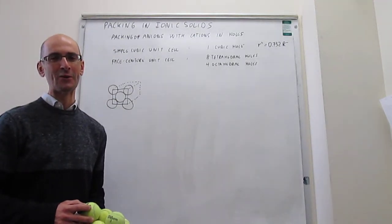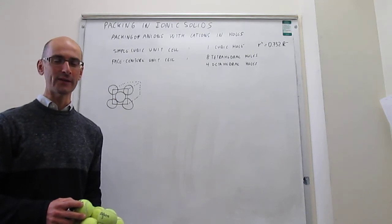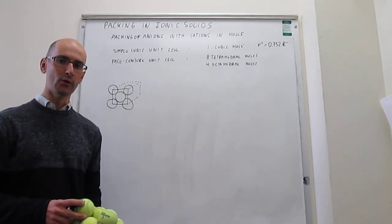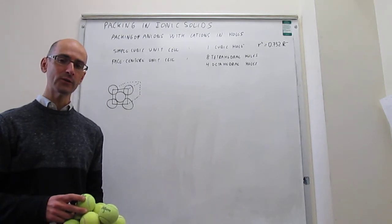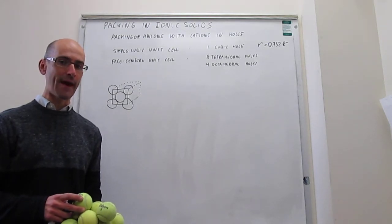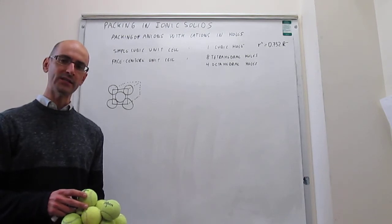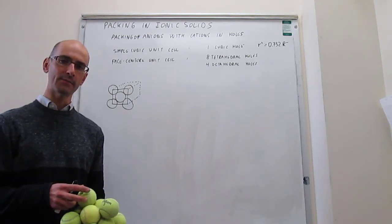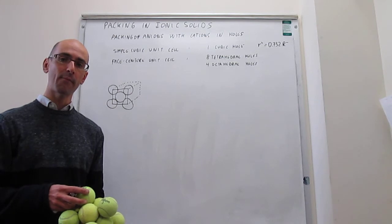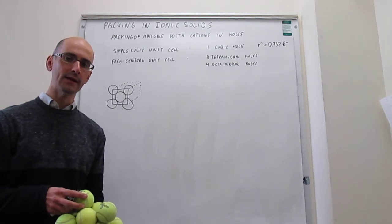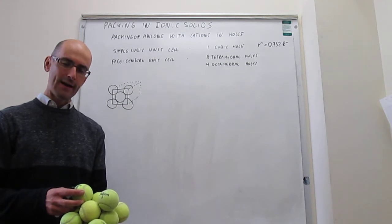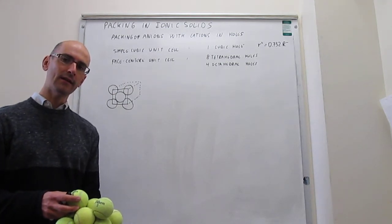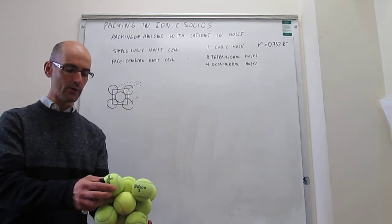In this video, we show how to calculate the limiting cation radius in the octahedral hole of a face-centered cubic unit cell. We're trying to determine how ionic solids pack. The idea here is that generally anions pack much as metal atoms do, and cations pack in the holes left behind by that anion packing. Suppose that the anion is packed in a face-centered cubic unit cell, like what we have right here.